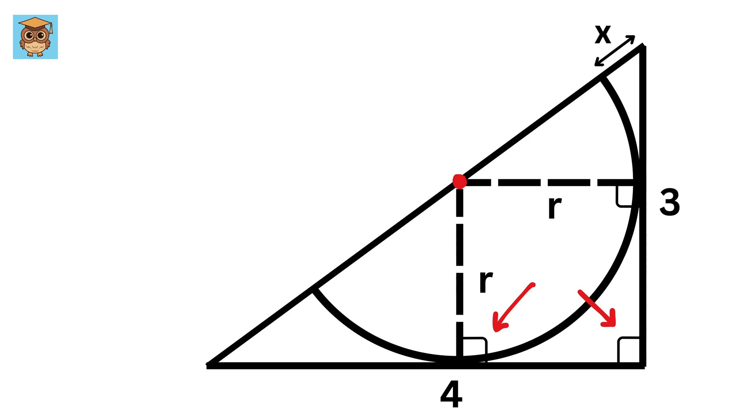Now this is 90, this is also 90, and this is also 90. So this angle will also be 90 degrees. And since this side is R and this side is also R, therefore it will be a square, and thus both of these will also be R.